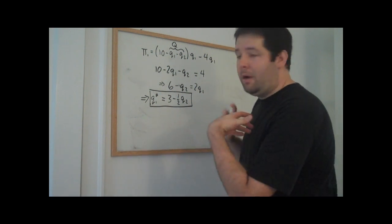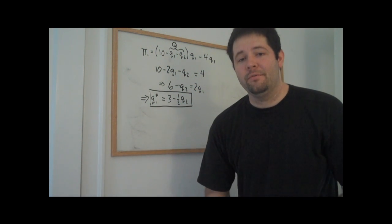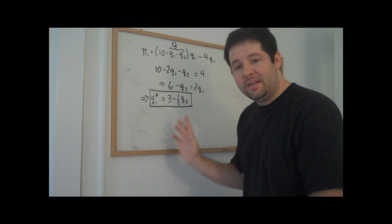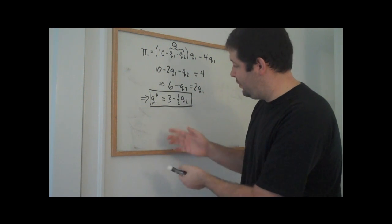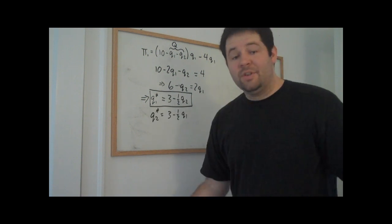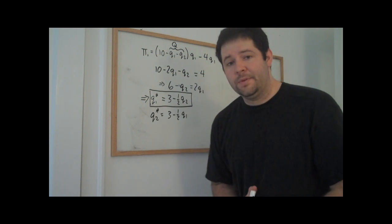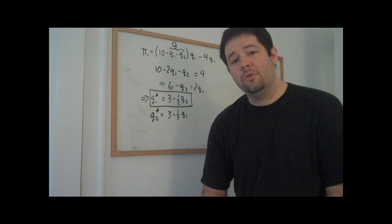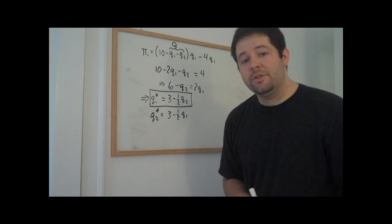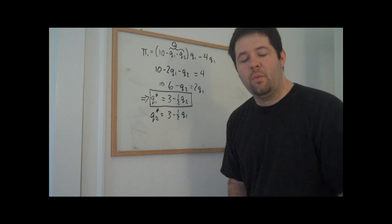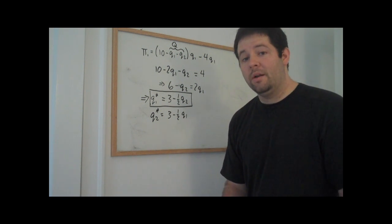Similarly, if we did this problem exactly the same for firm two, we would get a best response function for firm two, and it would look identically except we switched the roles of Q1 and Q2. Now what we have with these two best response functions is a system of two equations and two unknowns, and we can solve this system of equations and find out what the equilibrium quantity is going to be.